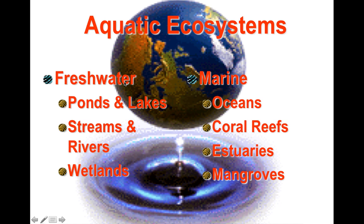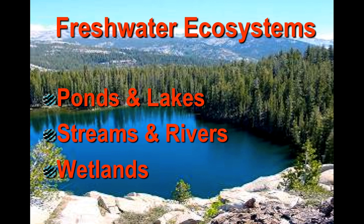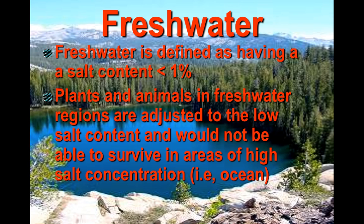Today we're going to look at aquatic ecosystems — freshwater versus marine. Our freshwater ecosystems are ponds and lakes, streams and rivers, and wetlands. Freshwater is a body of water with less than 1% salt content, and the plants and animals found in that area thrive predominantly on freshwater and cannot survive in areas with higher salt content.